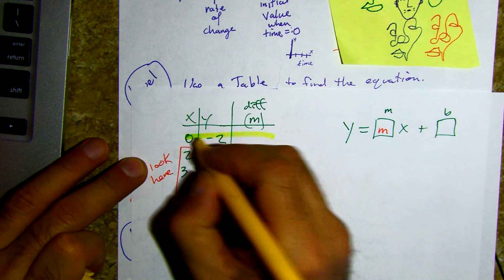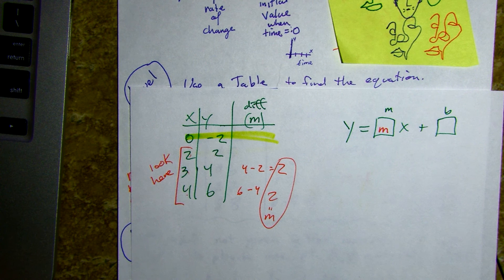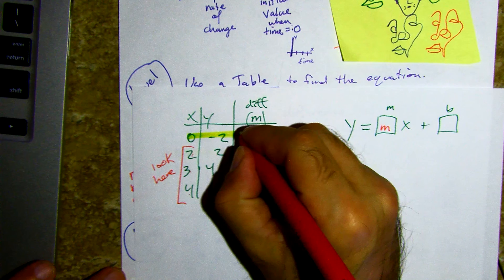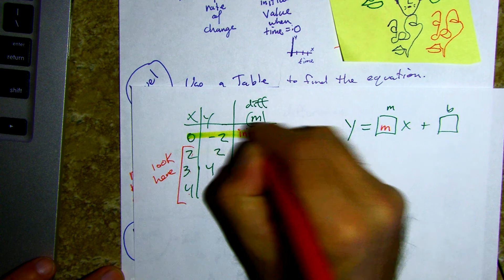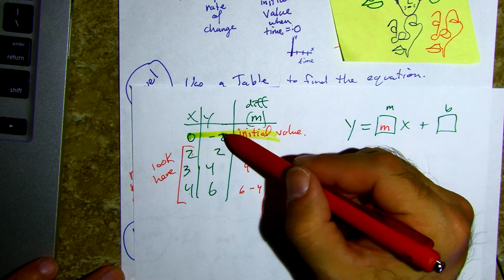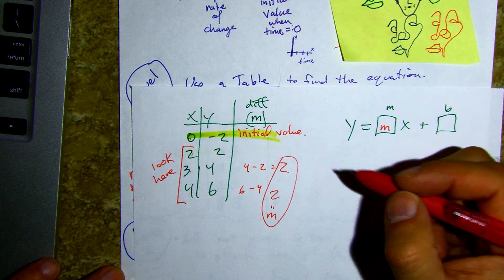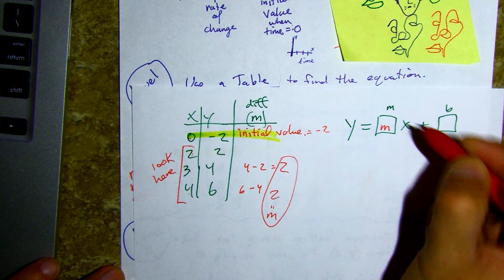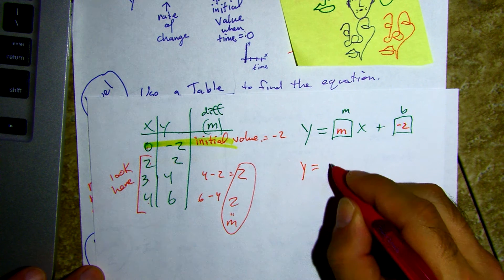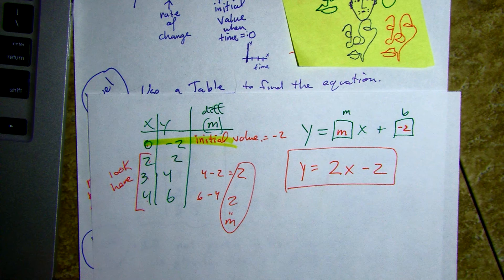Somebody in the chat tell me what that negative two must be. When x is zero, when time is zero, what do you have? Very good, Jacqueline — this is our initial value, our initial amount. When x is zero we're on the y-intercept and that's our initial value. So our initial value is negative two, and the slope is two. That's number eleven, 2.7.1.